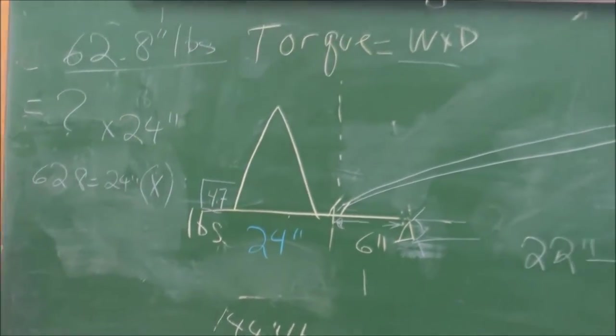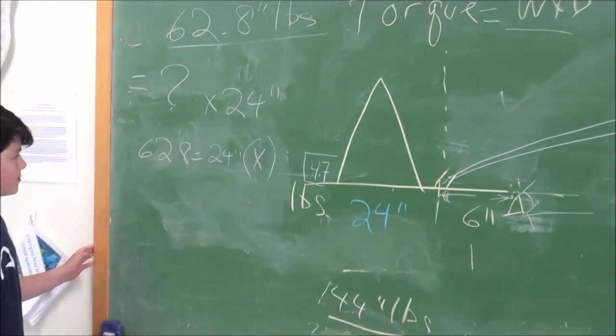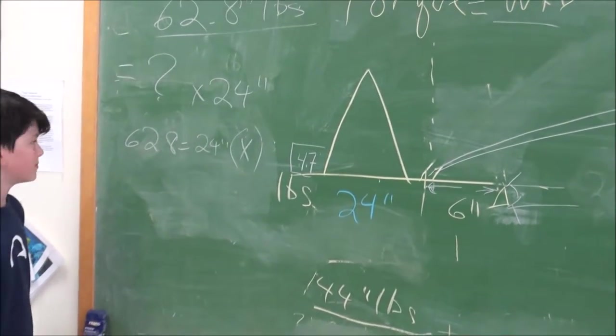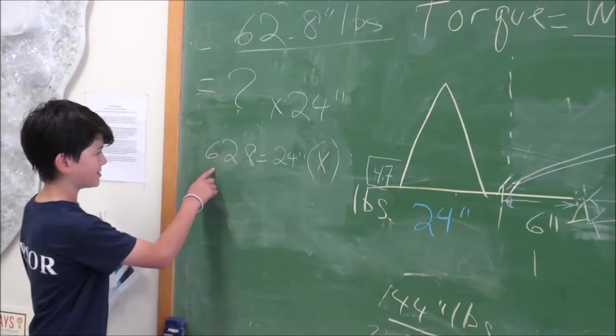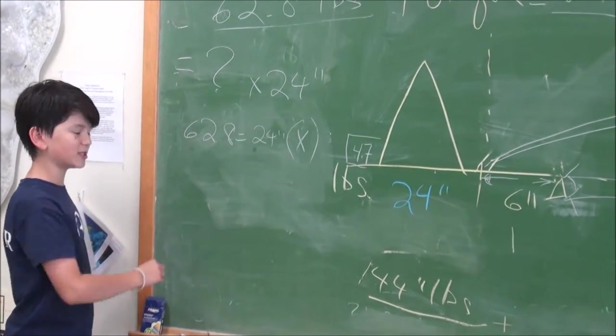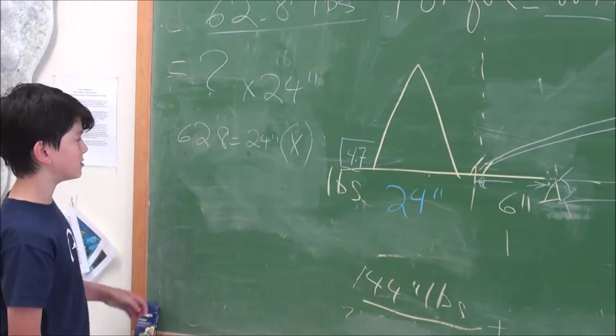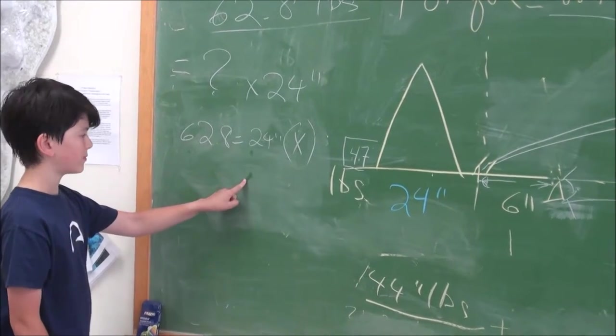Torque is weight times distance. We know the distance is 24, so the weight is x. So to get the weight, we're going to do 62.8 divided by 24, which is 2.51 pounds.